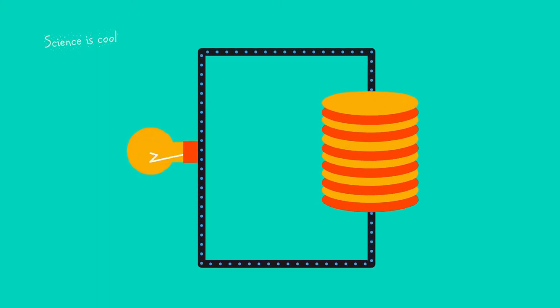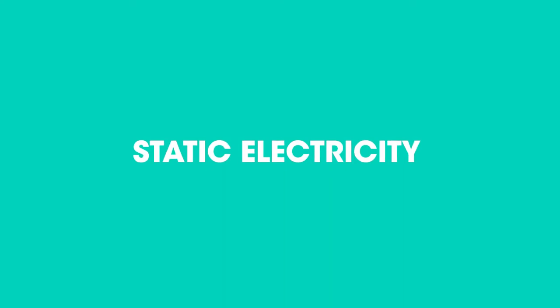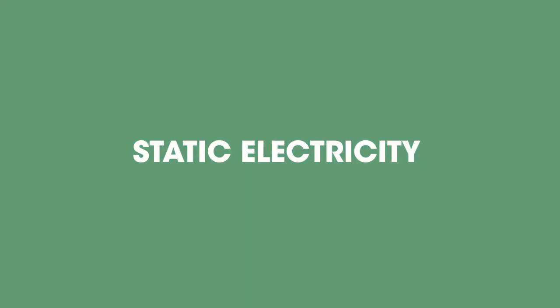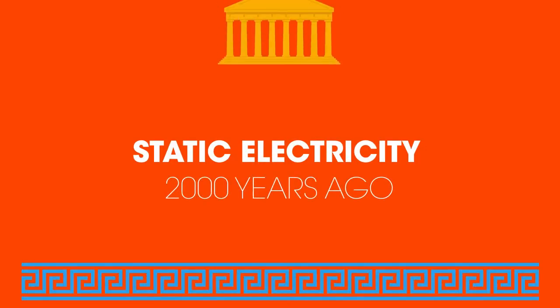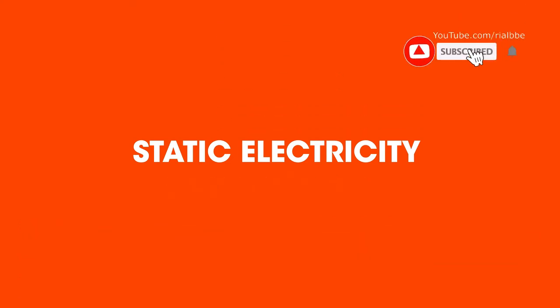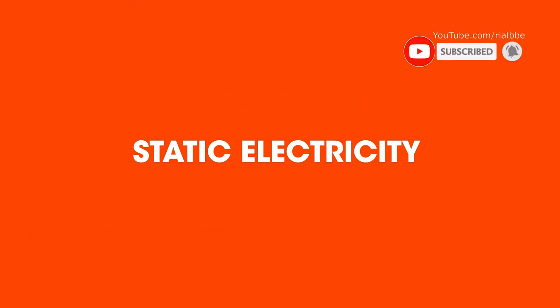Current electricity is a relatively recent discovery, whereas the effects of static electricity were written about over 2,000 years ago in ancient Greece. As the name static electricity suggests, it is static, it doesn't move.